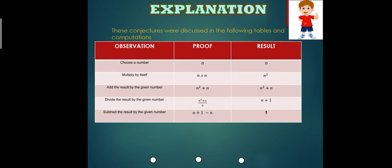Choose a number N. Let's say our number N is N. If you are going to multiply it by itself, you will have N times N or N squared. And you will add N to the result, you will have N squared plus N.